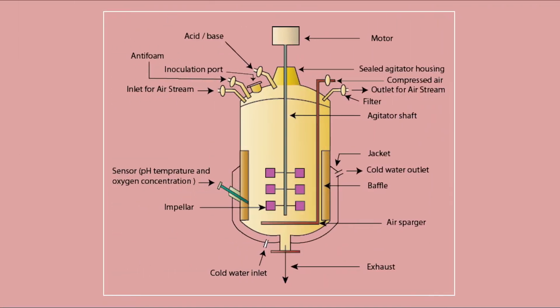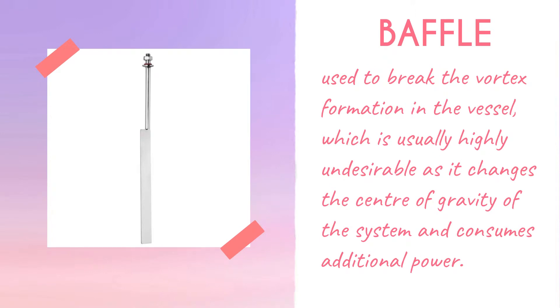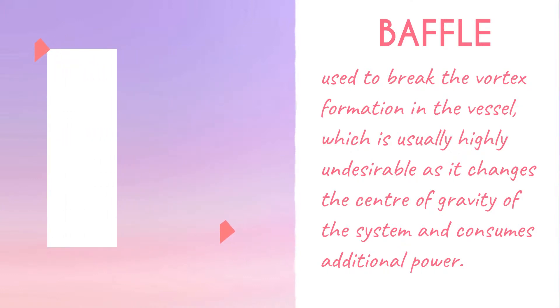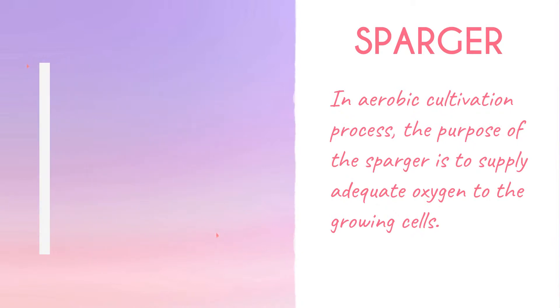Baffles can be used to break vortex formation in the vessel, which is usually highly undesirable as it changes the center of gravity of the system and consumes additional power. In aerobic cultivation processes, the purpose of the sparger is to supply adequate oxygen to the growing cells.